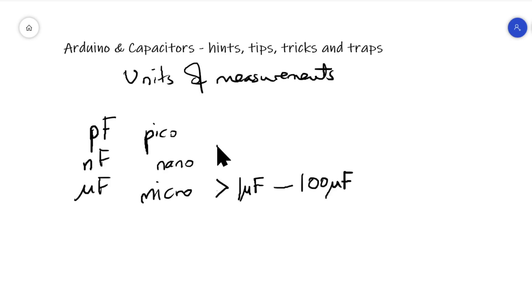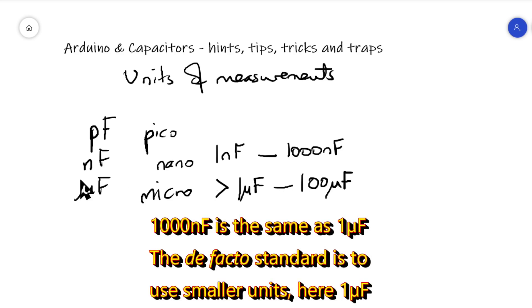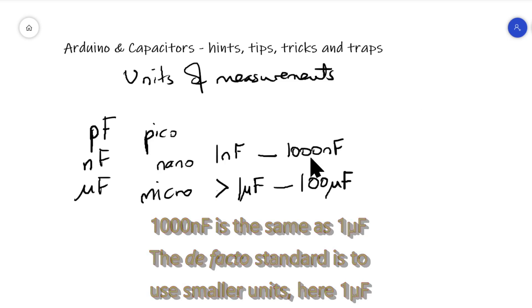Nano, you probably get one nanofarad up to a thousand nano, but then you've got an overlapping range here with just different units. For example, a thousand nanofarads is one microfarad. So we tend probably not to use that value.